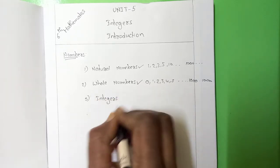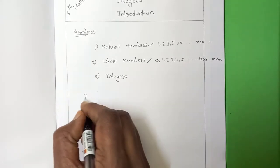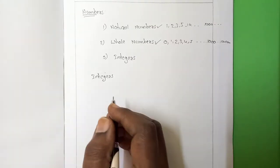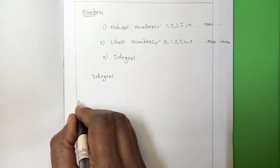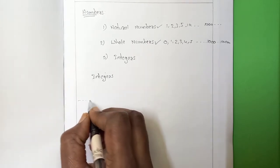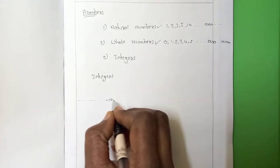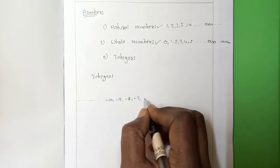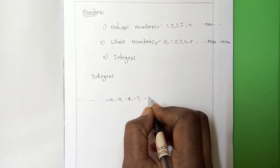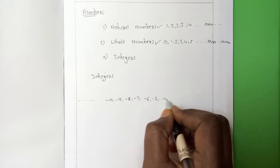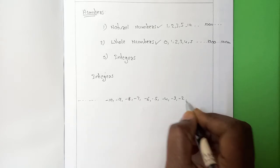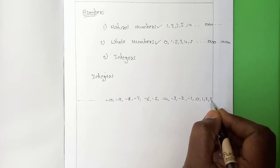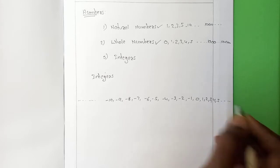Then what is an integer? What are integer numbers? The integer numbers include negative numbers — minus 10, minus 9, minus 8, minus 7, minus 6, minus 5, minus 4, minus 3, minus 2, minus 1, then 0, 1, 2, 3, 4, 5 and so on.